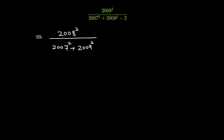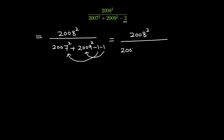I will break the minus 2 down into minus 1 and minus 1. In the next step I am going to combine this minus 1 with 2007 squared and this minus 1 with 2009 squared. So this is further equal to 2008 squared over 2007 squared minus 1 plus 2009 squared minus 1.